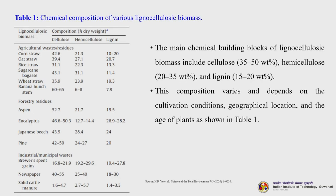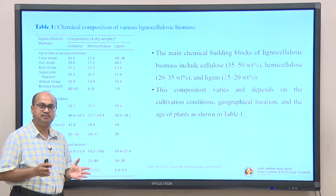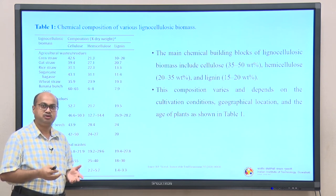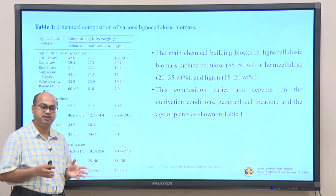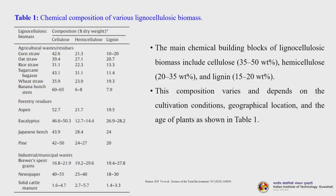Please have a look at this particular table where the chemical composition of various lignocellulosic biomass has been listed. It is listed under three different categories: cellulose, hemicellulose and lignin. Apart from these there are other materials also — proteins, volatile materials and so on. The main chemical building blocks include cellulose at about 35 to 50 percent, hemicellulose at 20 to 35 percent, and lignin which varies from 15 to 20 percent. The composition depends on cultivation conditions, geographical location and the age of plants.